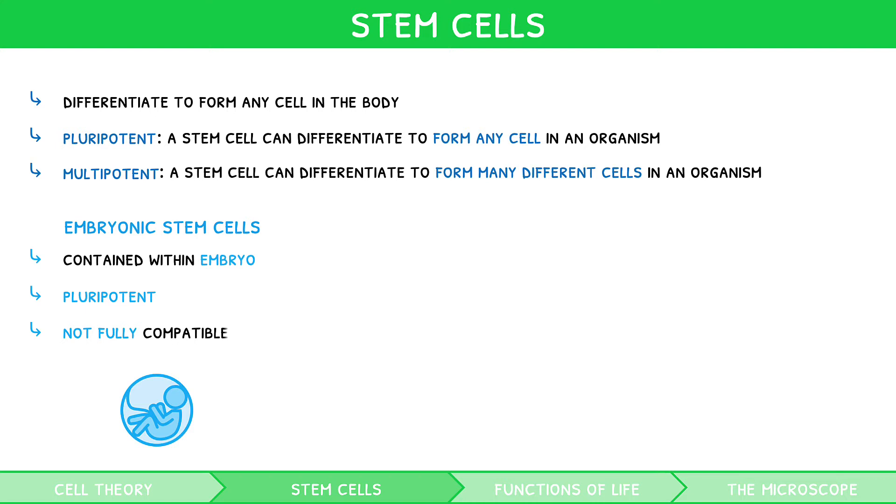The second are cord blood stem cells. These are found in the umbilical cord of the child. As a result, they are only multipotent, but they are fully compatible with the grown adult.